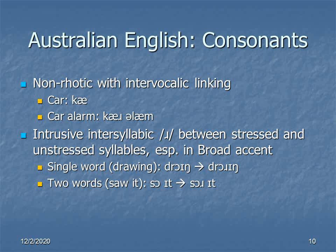An Australian is more likely to say A CAH. And while a Canadian would say A CAR ALARM and someone using received pronunciation might say something like CAH ALARM, an Australian is more likely to say CAH RALARM. There is also a slight intrusive intersyllabic R between stressed and unstressed syllables, particularly in the broad Australian accent. So rather than saying DRAWING, someone speaking broad Australian might say DRAWRING, or rather than saying I SAW IT, someone speaking broad Australian might say I SAWR IT.